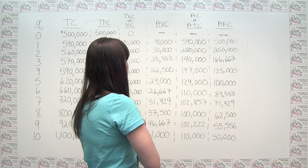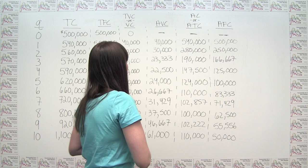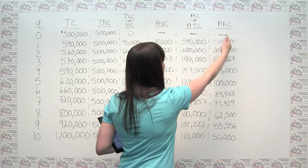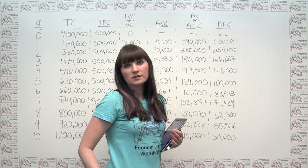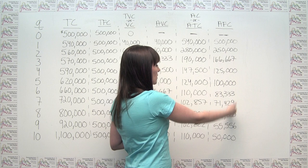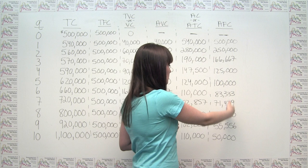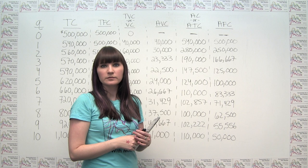Our average fixed cost, rather than having the downturn and upswing we saw with AVC and ATC, is always declining as we produce more units. That's not entirely surprising because our fixed cost is, as its name would suggest, fixed. We're just spreading it out over more and more units, so we see something strictly decreasing.